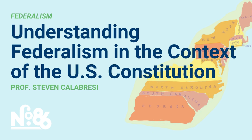Many Americans are used to hearing that China has the second largest economy in the world after the United States, but China also has four times as many people. Per person, China is a very poor country compared to the United States. Essentially, China has 300 million middle class citizens, a small crust of wealthy Communist Party leaders, and a billion people living in poverty. India also has a huge problem with poverty — India's GDP per capita is about 144th in the world.